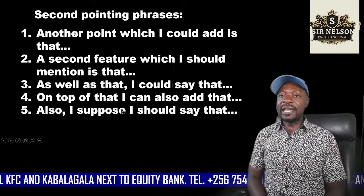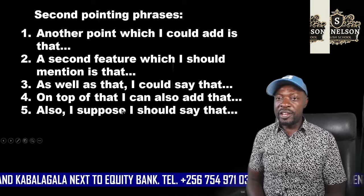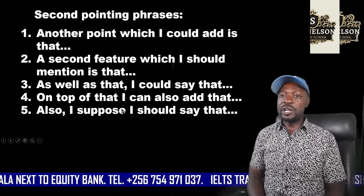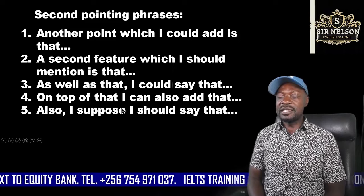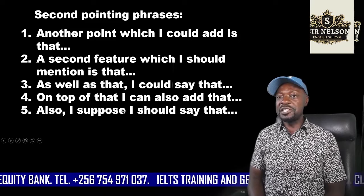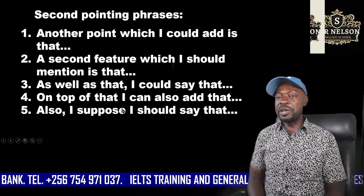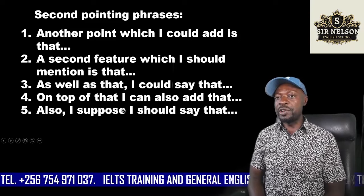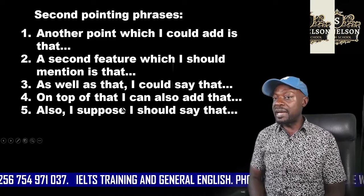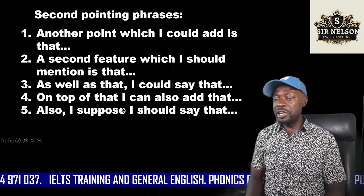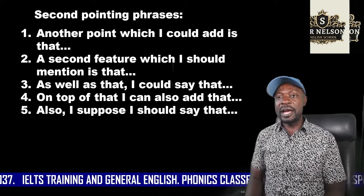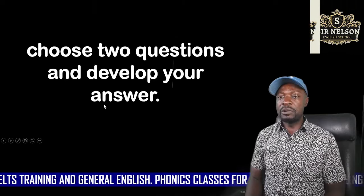Second pointing phrase: 'Another point which I could add is that' — this is a pointing phrase showing that I am going to add another point about my hometown.